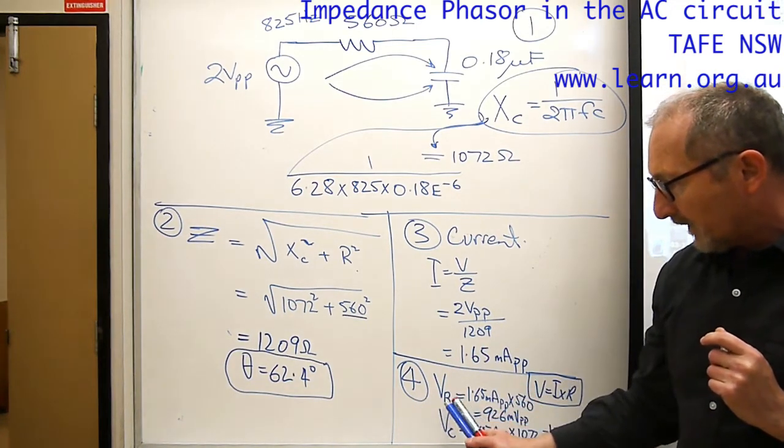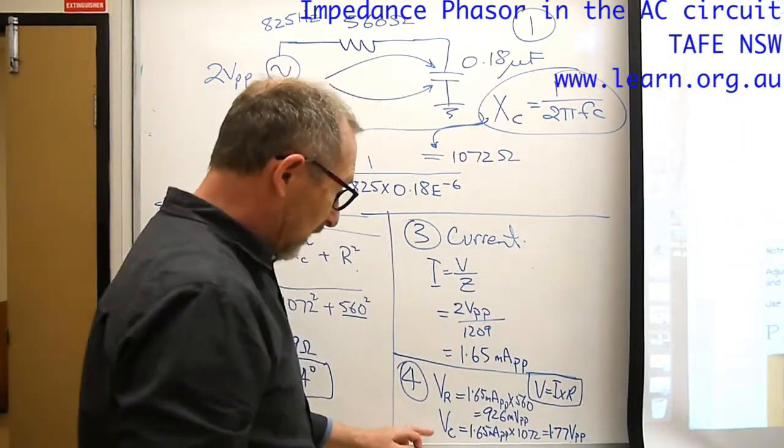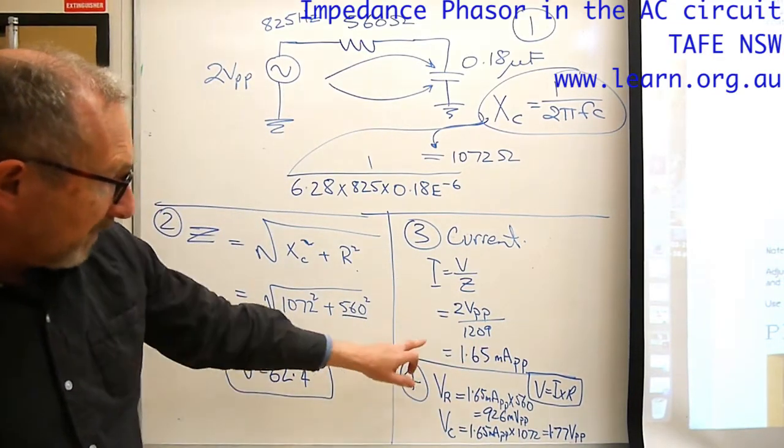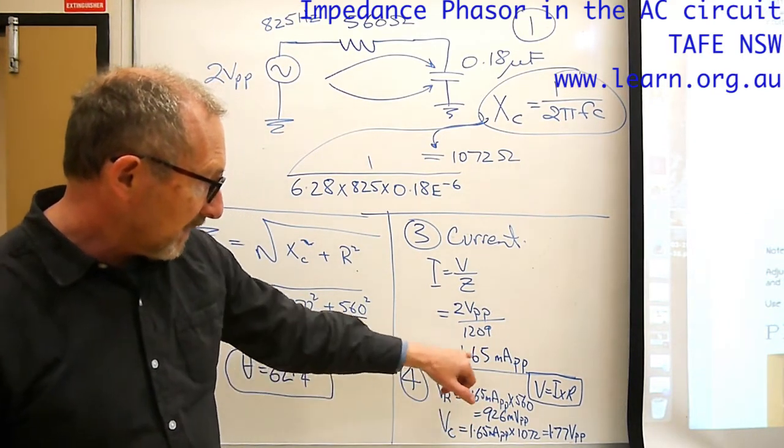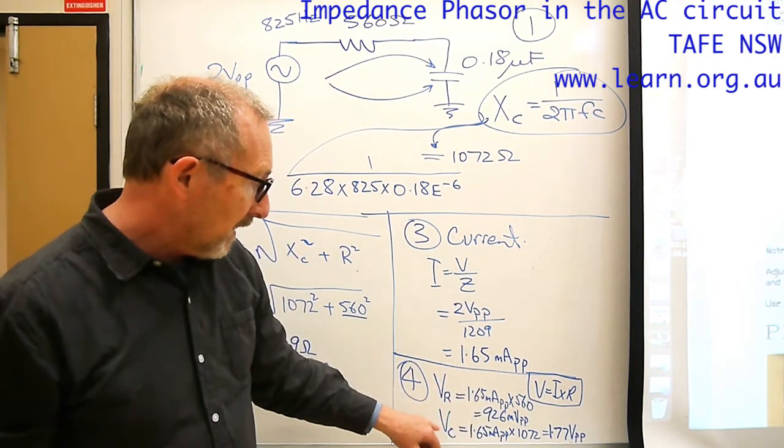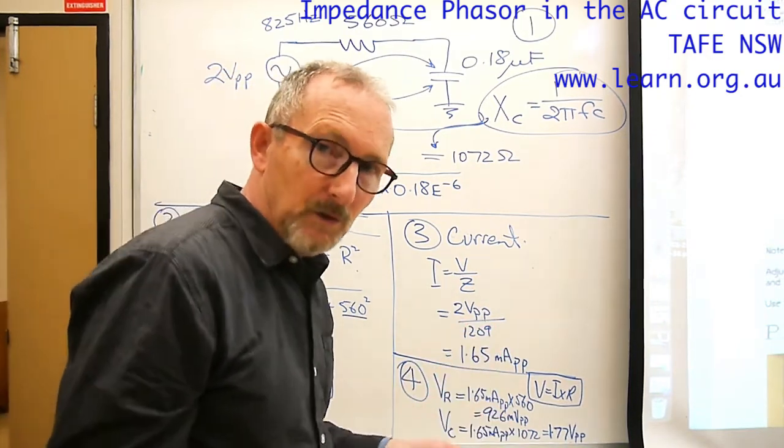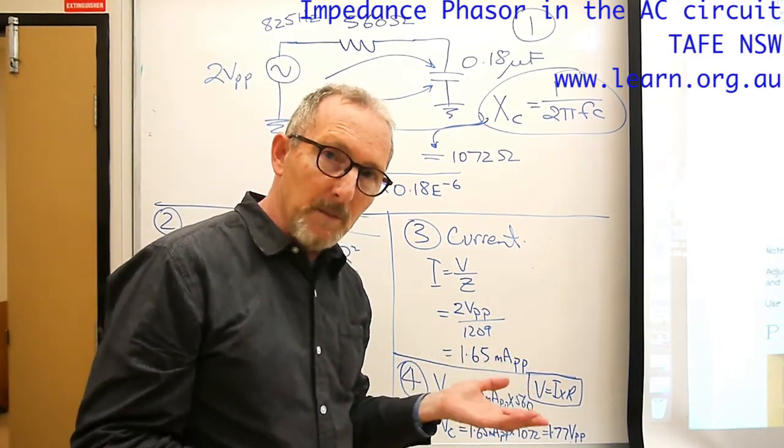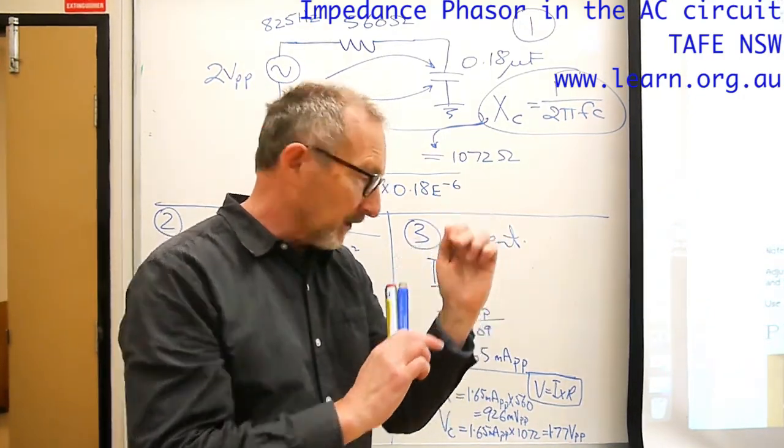Once we have the current, number 4 we can work out the voltage across the resistor and the voltage across the capacitor. I've worked everything out in peak to peak, so I've worked out a peak to peak current 1.65 milliamps peak to peak. Using that same peak to peak current gives me the voltage across the resistor in peak to peak, voltage across the capacitor in peak to peak. No need to complicate things and do in RMS because after all, if the students go back to the oscilloscope they can check this on the screen because we have peak to peak measured directly on the oscilloscope screen.